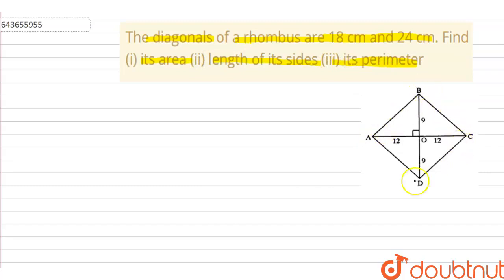In this figure, ABCD is a rhombus. AC and BD are its diagonals which intersect each other at point O. And we know the diagonals of rhombus bisect each other at right angle.